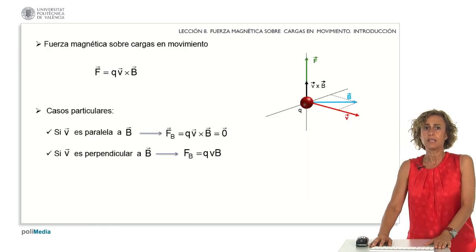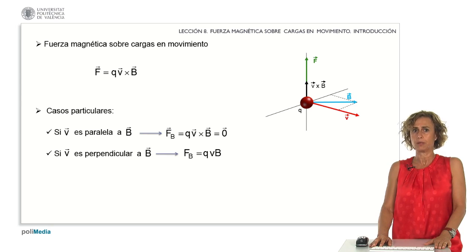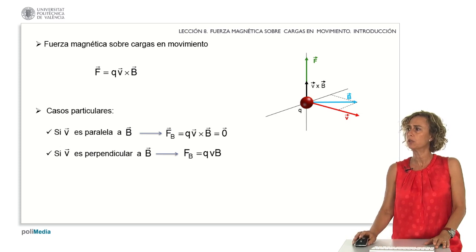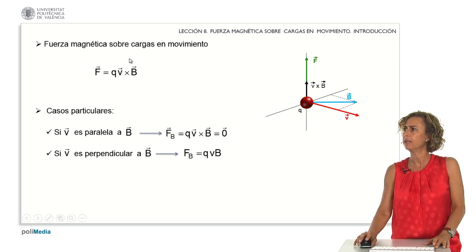In our previous session, we determined that the magnetic force acting on a moving charge experimentally obtained is proportional to the charge value times the magnitude of velocity and magnetic field, and the sine of the angle between these vectors. Mathematically, this was expressed as shown. We also explored specific scenarios.